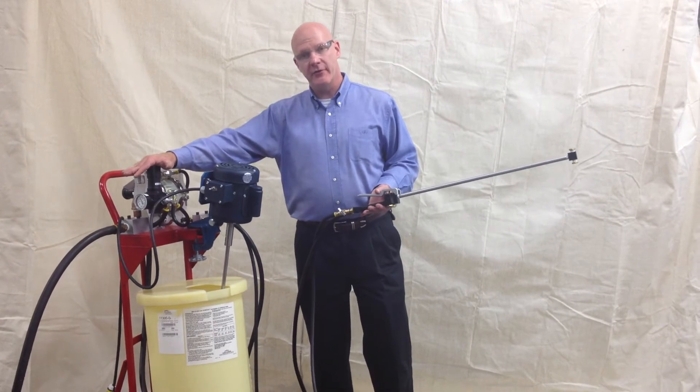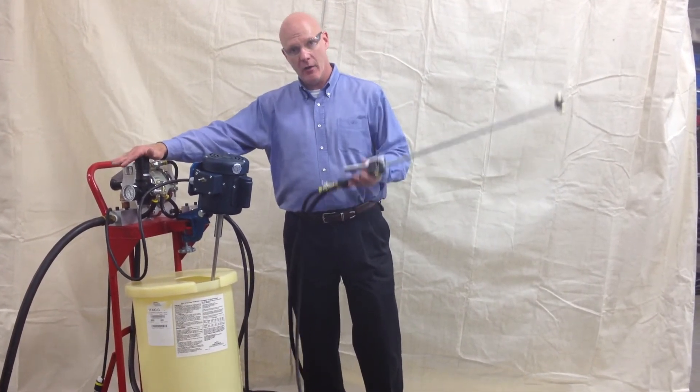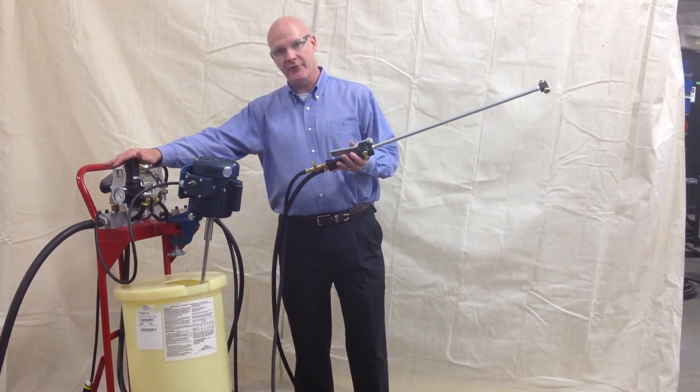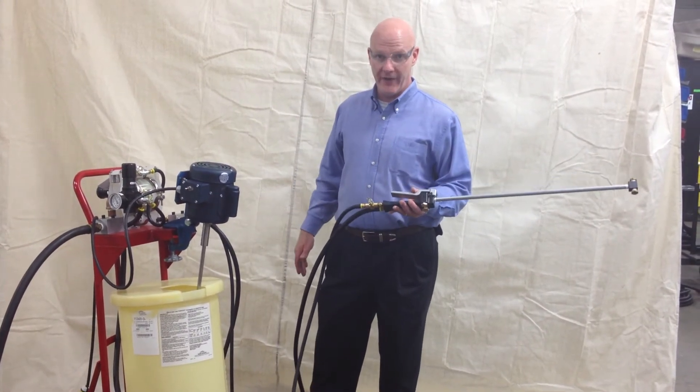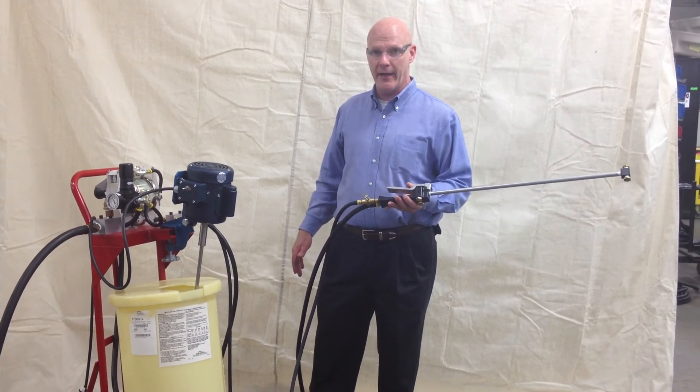Whatever pressure we set this regulator is what our lube pressure is. At 40 PSI with this spray wand, we'll get about 0.49 gallons per minute. At 50 PSI, we'll get 0.58 gallons per minute. And at 60 PSI, we'll get 0.63 gallons per minute.